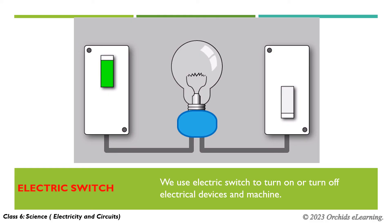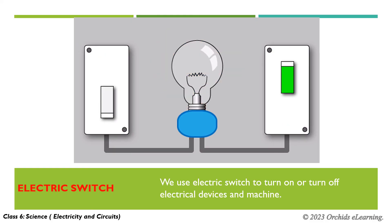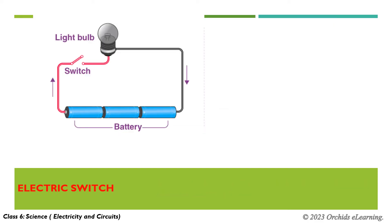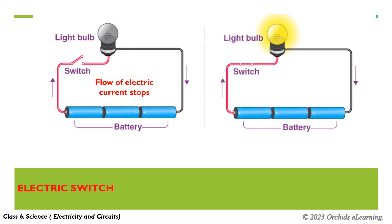We use electric switches to turn on or turn off electrical devices and machines. An electric switch is a device that is used to open or close an electric circuit. When we open an electric circuit, the flow of electric current stops, and when we close an electric circuit, an electric current flows through it. In an electric circuit, a switch is sometimes referred to as a key.